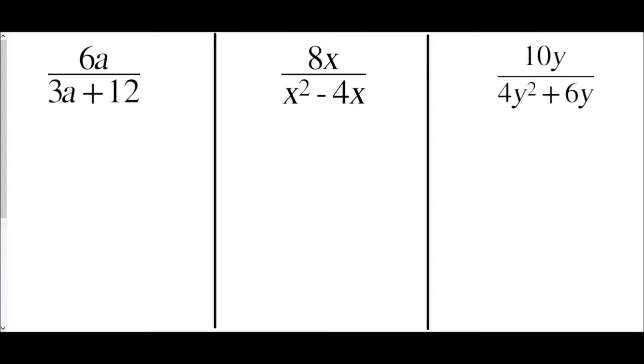Okay, so three questions here and in each case we're going to try to simplify these fractions. We need to factorise either the denominator, the numerator, or both. In the first case, 6a over 3a plus 12 — we can't factorise the top but we can factorise the bottom. The common factor of 3a and 12 is 3, giving us 3(a + 4).